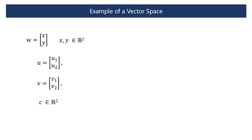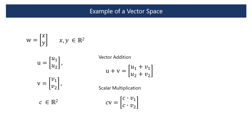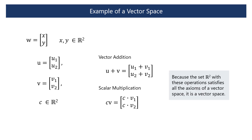Let's consider the set of all two-dimensional vectors over the real numbers, denoted as R². This set includes all vectors of the form (x, y) where x and y are real numbers. For vector addition, if vectors u and v are expressed in component form, their sum can be expressed component-wise. For scalar multiplication, if c is a real number and vector v is expressed in component form, the product is also expressed component-wise. Because the set R² with these operations satisfies all the axioms of a vector space, it is a vector space.